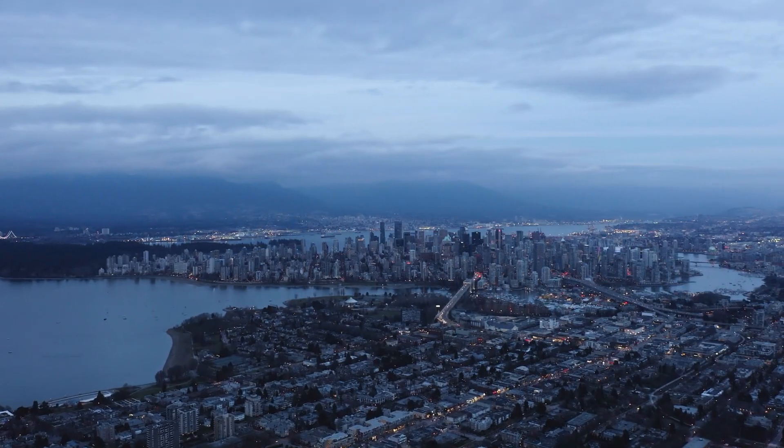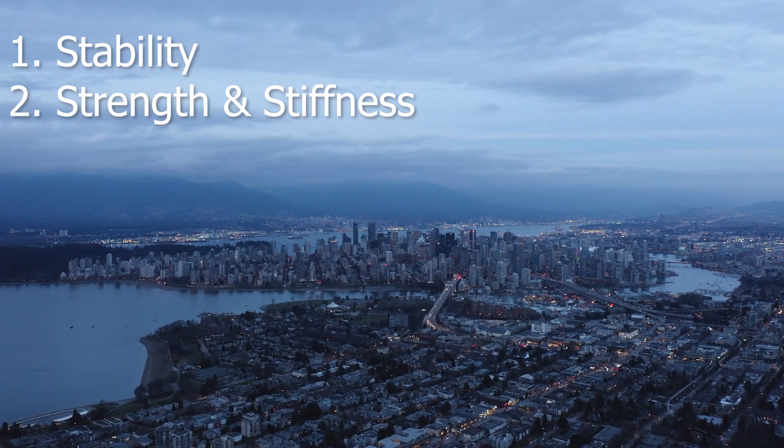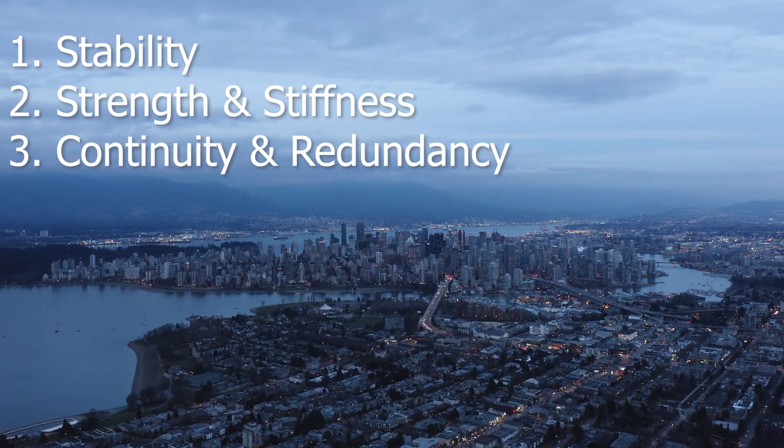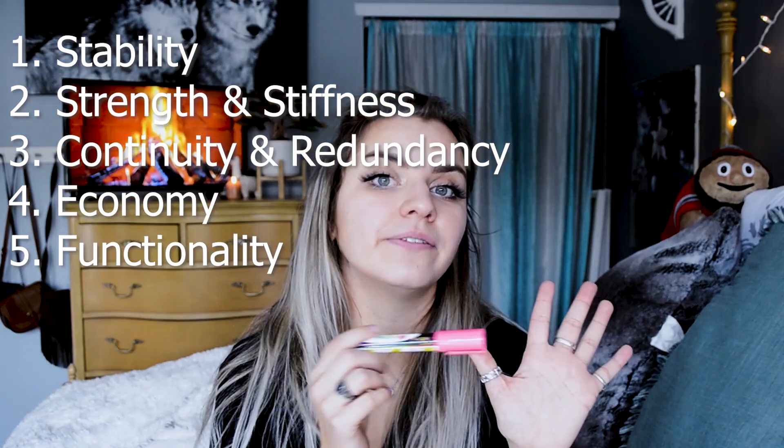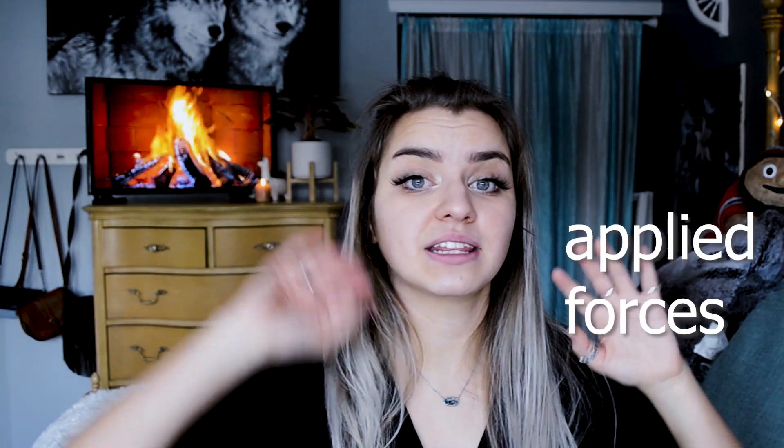Fundamentally, all buildings can be broken down into six key points: one, stability and equilibrium; two, strength and stiffness; three, continuity and redundancy; four, economy; five, function; and six, aesthetics. Structural design is a balance between applied forces and the materials that resist those forces — there's always a tension and a dance between these two.